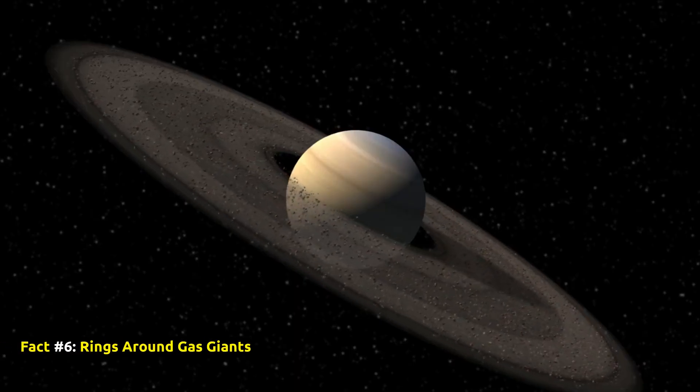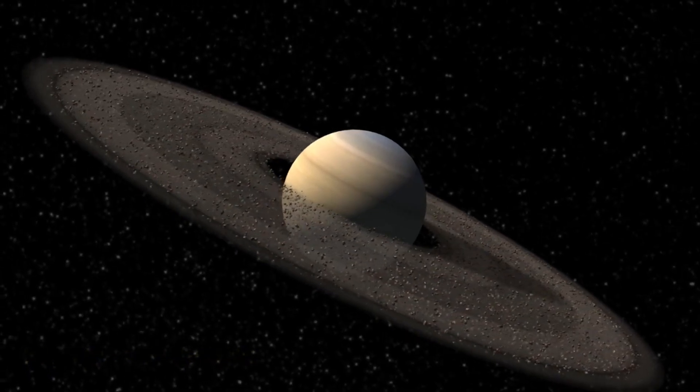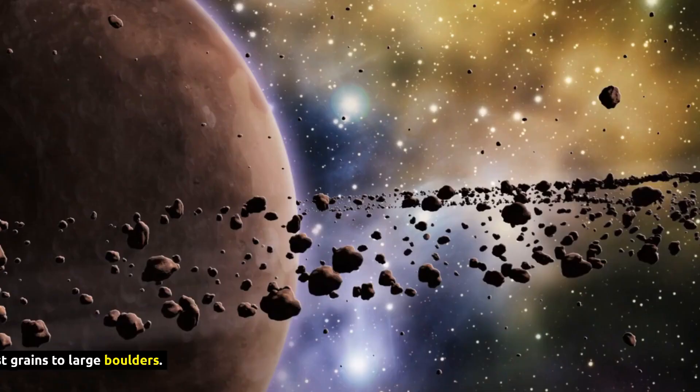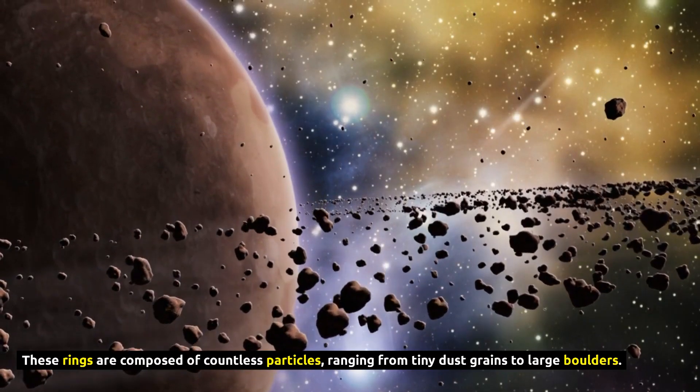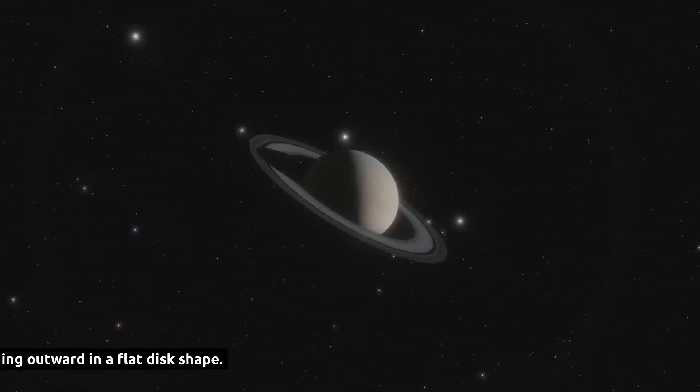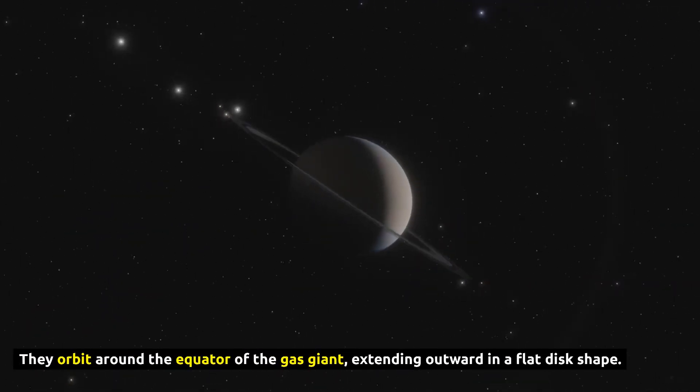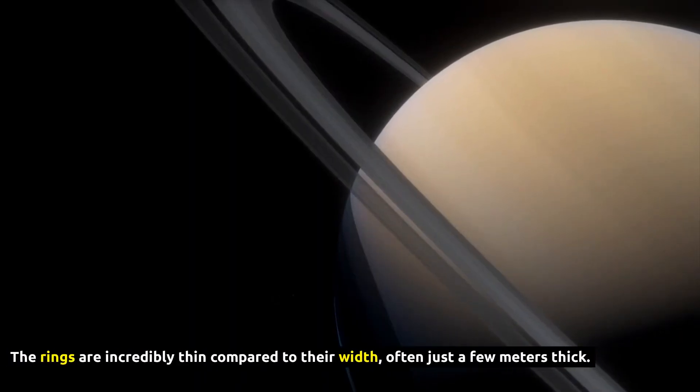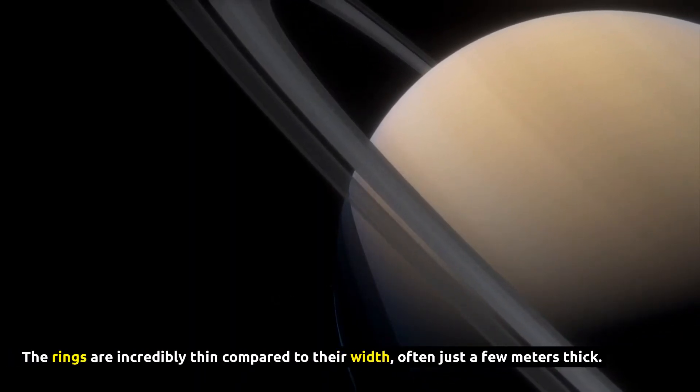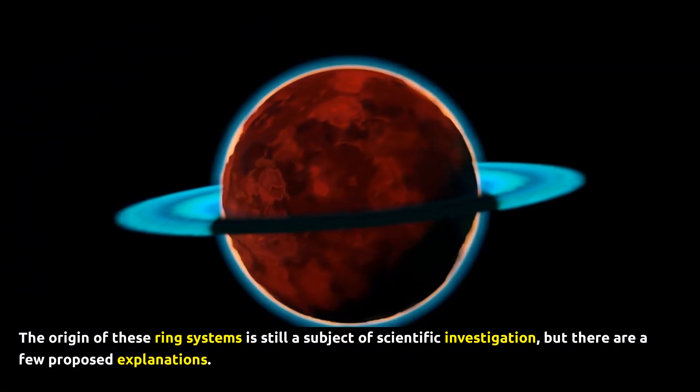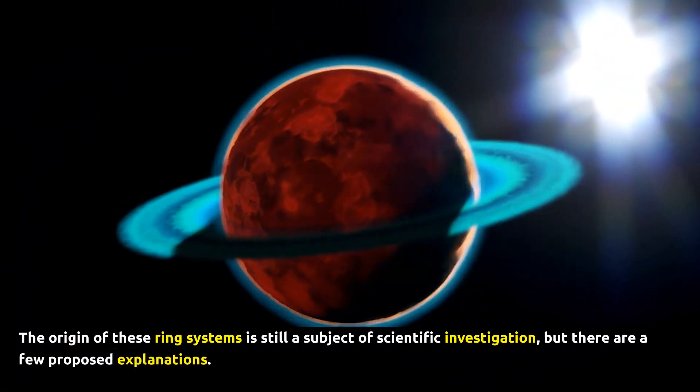Fact Number 6, Rings Around Gas Giants. Gas giants like Saturn and Neptune are known for their spectacular ring systems. These rings are composed of countless particles, ranging from tiny dust grains to large boulders. They orbit around the equator of the gas giant, extending outward in a flat disk shape. The rings are incredibly thin compared to their width, often just a few meters thick.